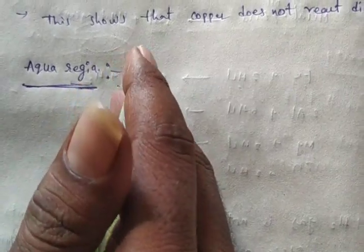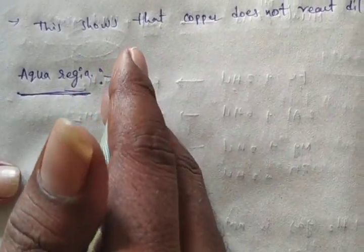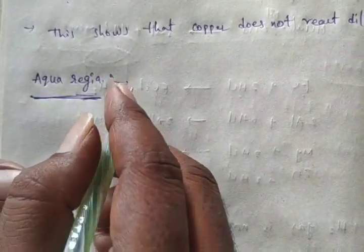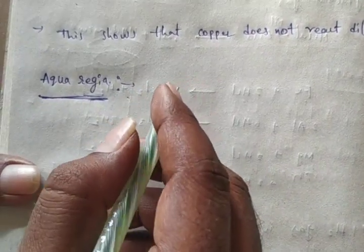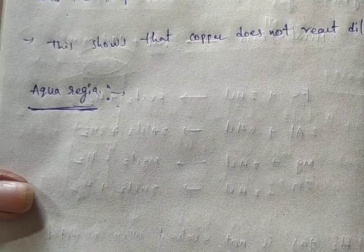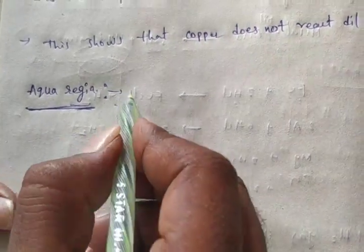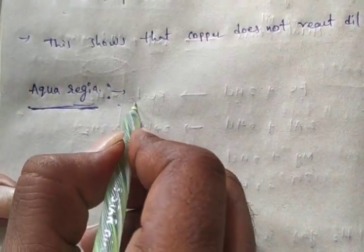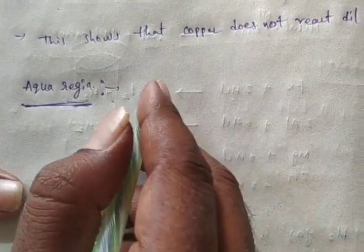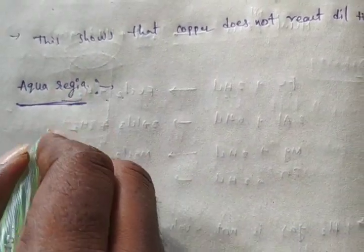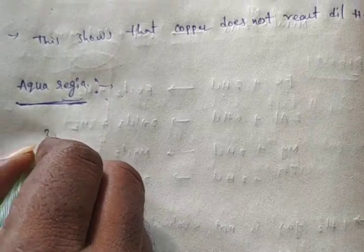HNO3 is also concentrated. Aqua regia can dissolve gold and platinum. Aqua regia is highly corrosive. Gold and platinum are dissolved in aqua regia, which is a 3:1 ratio mixture.